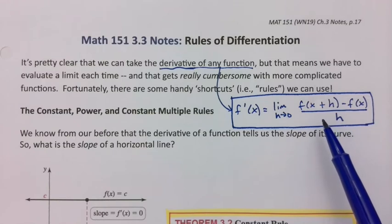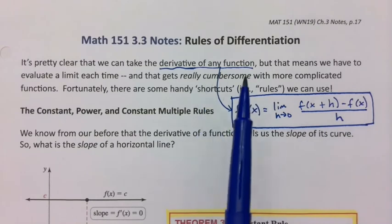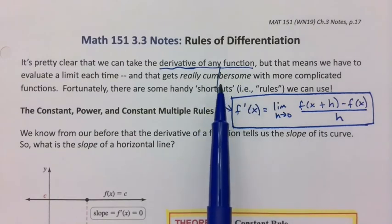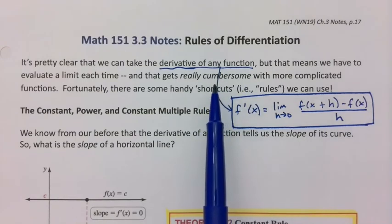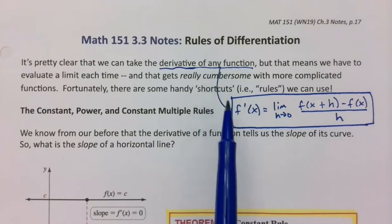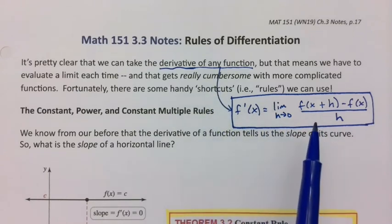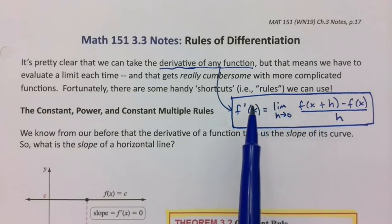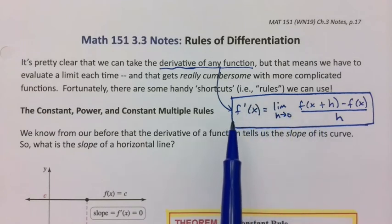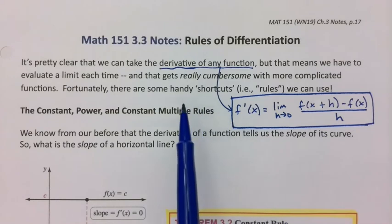However, even though it's the definition, it is very cumbersome. We don't want to use this all the time, especially as our functions are going to get more complicated. We were struggling to use this limit definition for quite frankly rather simple functions, and if things get more complicated than that, we're going to be in trouble. So we need some shortcut rules, and that's what section 3.3 is, and actually several of the next sections.